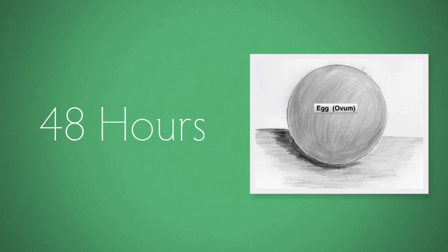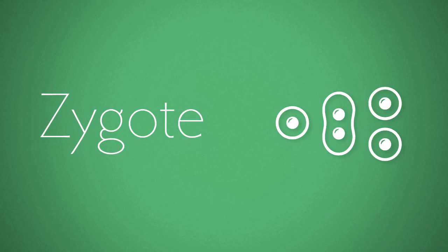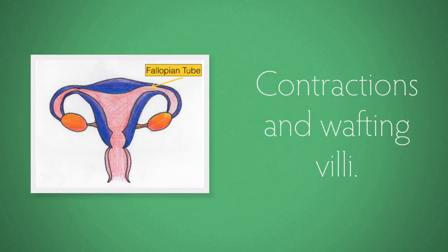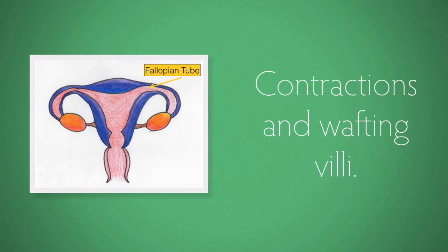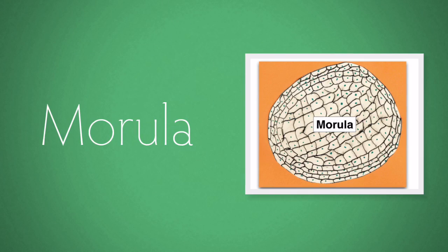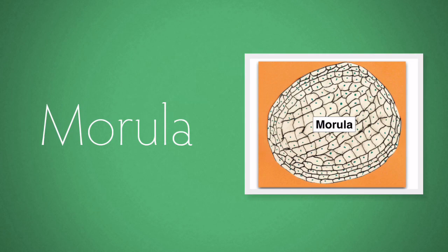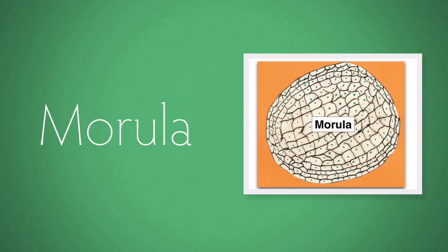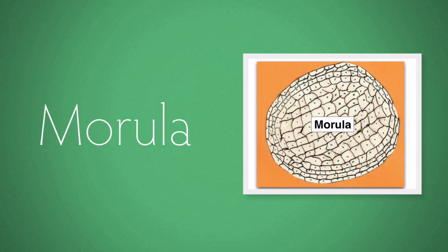This diploid zygote is now going to undergo mitosis many times. A ball of cells is produced by this mitosis and it is pushed along towards the uterus by contractions of the fallopian tube walls and cilia wafting it along. By the time the ball of cells reaches the uterus it's approximately 16 cells, but then it keeps dividing to form a ball of many cells known as a morula.